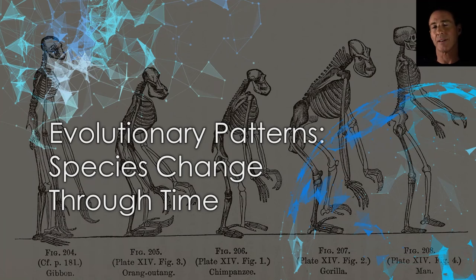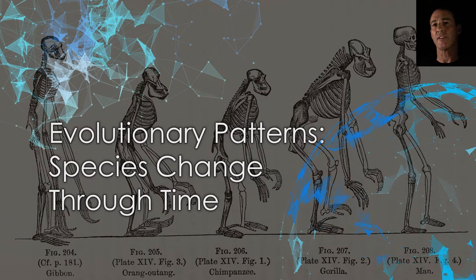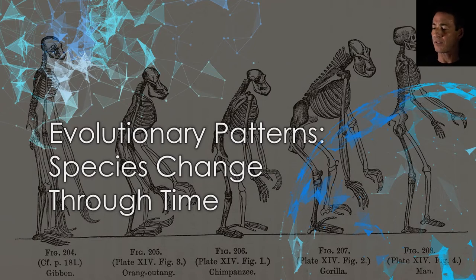What evidence supports the claim that species are not fixed types? Our most obvious record of the history of life is the fossil record. Given enough distinct fossils, the image of a tree of life begins to emerge.